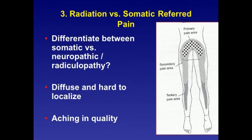Radiation versus somatic pain: we need to differentiate between somatic or neuropathic pain and radiculopathy — whether the pain is diffuse, hard to localize, and whether it has any quality. There are three zones of primary pain referred from the lumbar spine. The primary area is across the waistline to the sacral area; the secondary pain extends to the posterior thighs; and the tertiary pain area can spread below the knees from the popliteal fossa toward the heels.